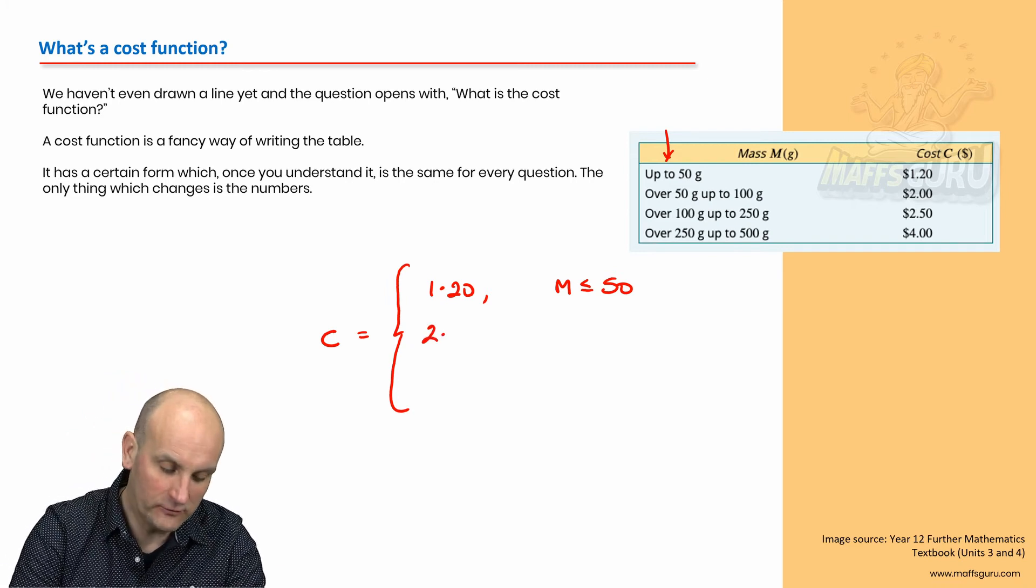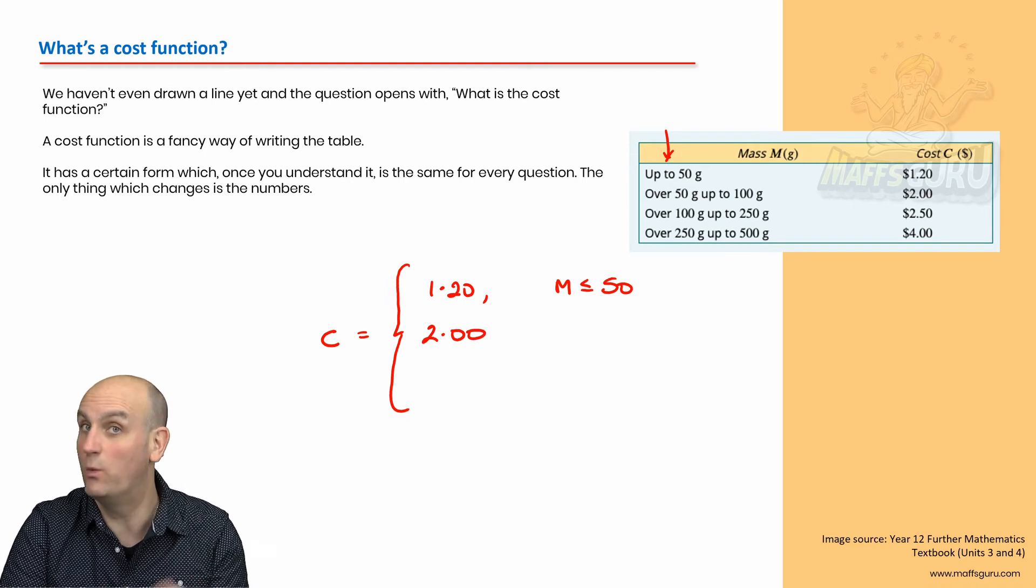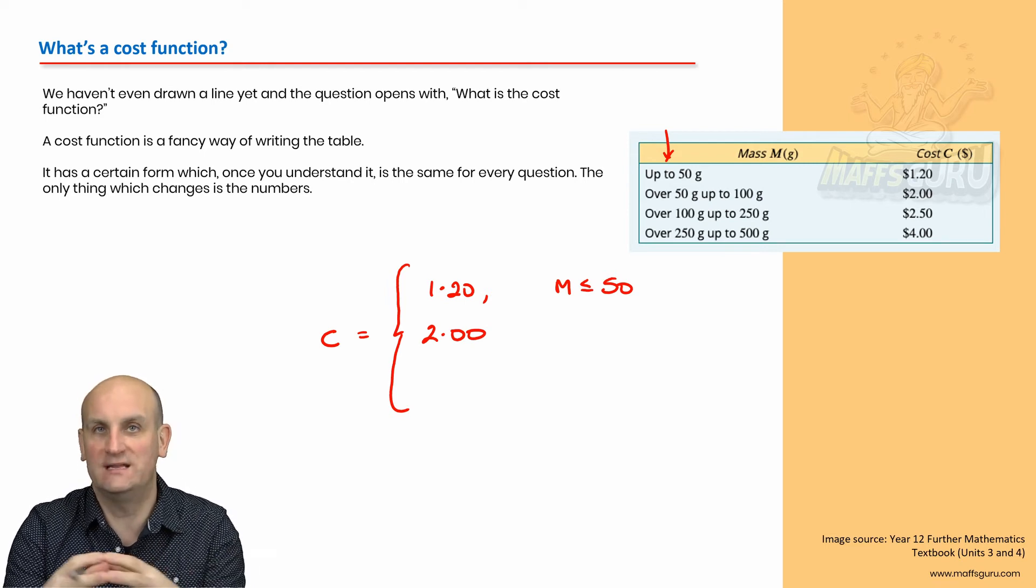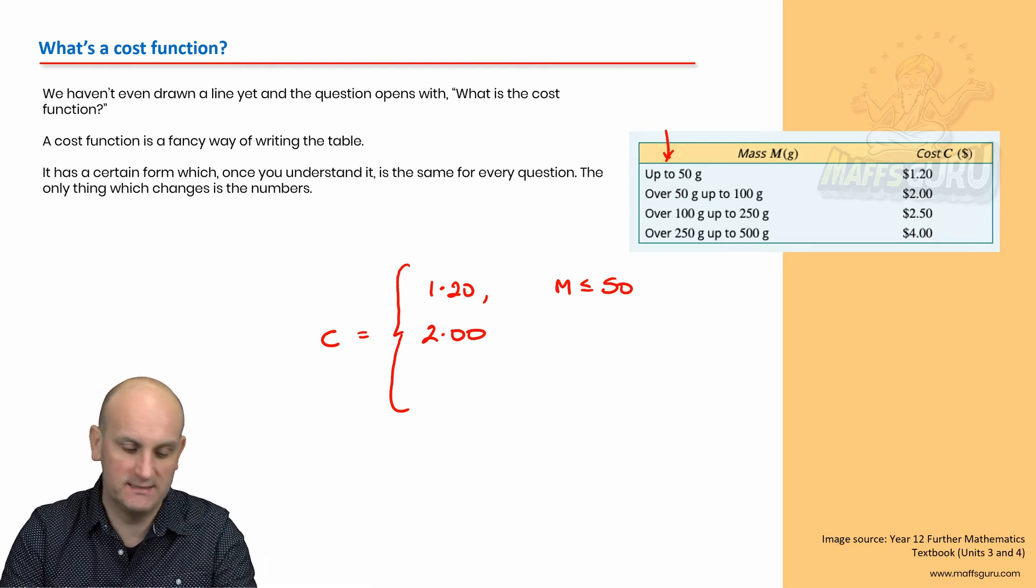Why on earth have I got less than or equal to 50? Because, it told me here, up to 50 grams means it's got to include 50 grams. So, my mass, if it's less than or equal to 50, is the same way as saying up to 50 grams. Easy. Thank you very much. My next cost is $2.00. I have to write it with cents. Why? Because, it's money. And, money has two decimal places.